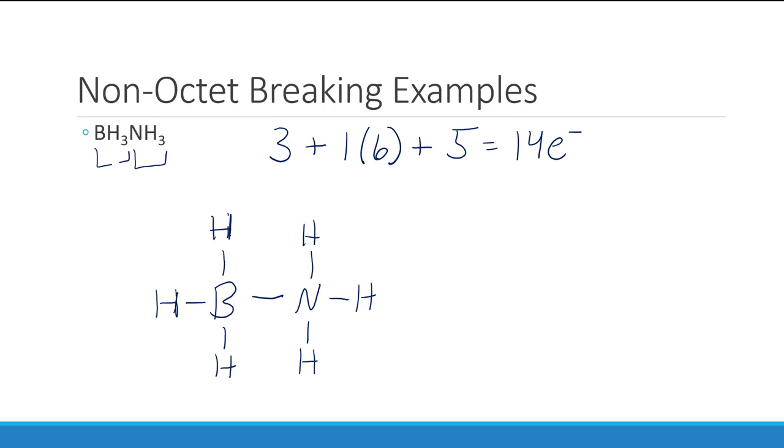So we don't have any more electrons, and everything has an octet except for the hydrogens, which aren't supposed to. Hydrogens are supposed to have what we call a duet, or two electrons, and they all have that. So everything is happy, to anthropomorphize a bit.